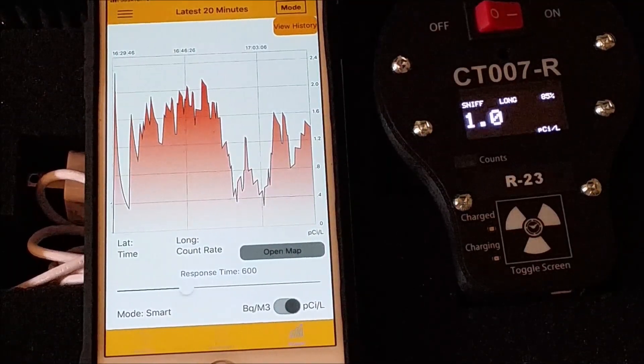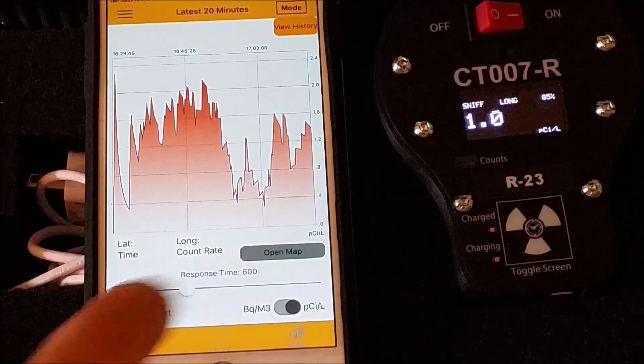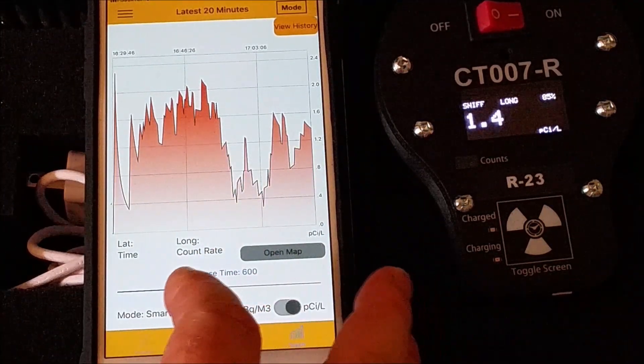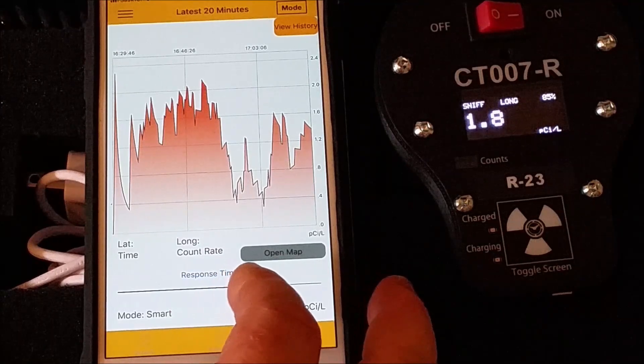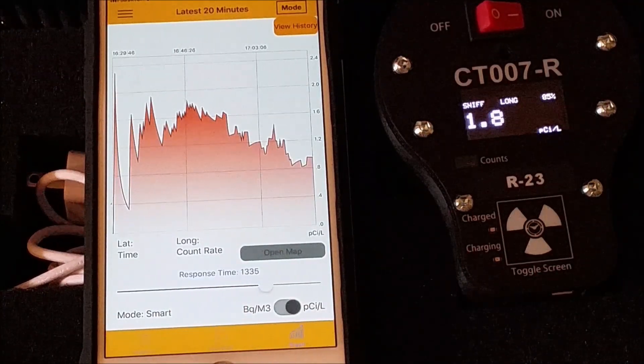Here we see the last 20 minutes of data. The response time is set to 600 seconds or 10 minutes. The average here is about 1.2 picocuries per liter. If we increase our response time, it averages our results out a little bit more. This gives us more accurate results with the sacrifice of some time resolution.